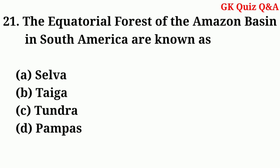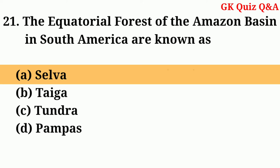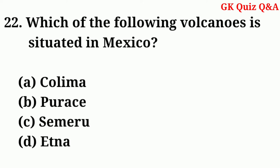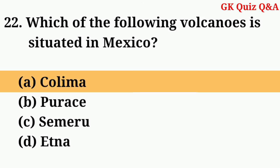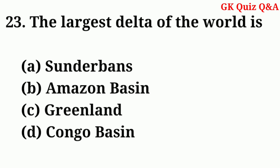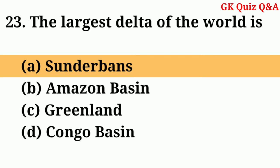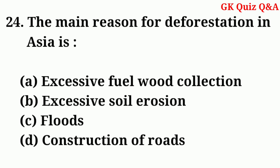The equatorial forests of the Amazon Basin in South America are known as? Answer: A — Selva. Which of the following volcanoes is situated in Mexico? Answer: A — Colima. The largest delta of the world is? Answer: A — Sundarbans.